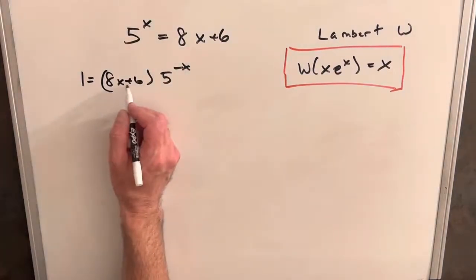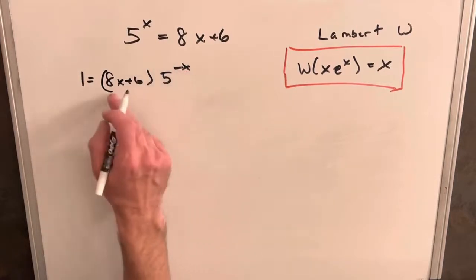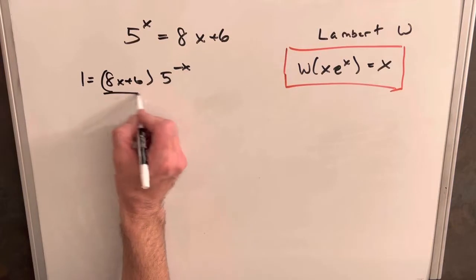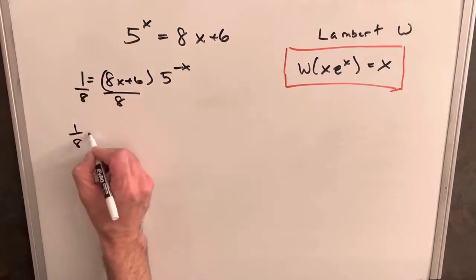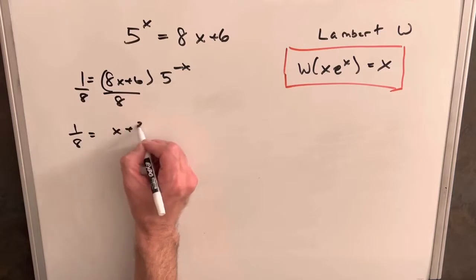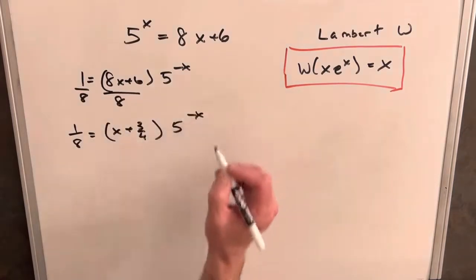I feel like dividing by an 8, just to get closer to what we have here, we have a minus 1 coefficient on this x, and if I divide by 8, we're going to have 1 eighth equals x plus 3 fourths, 5 to the minus x.